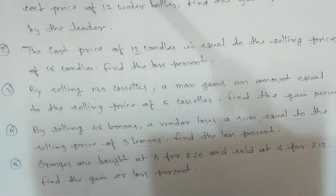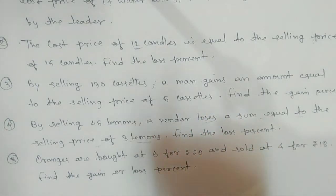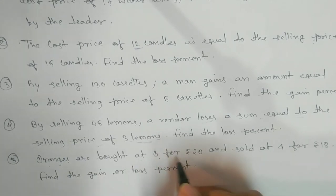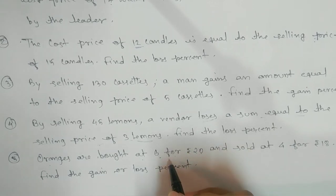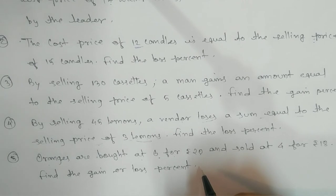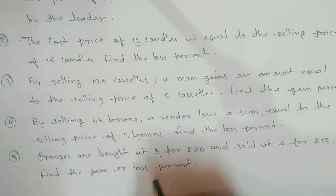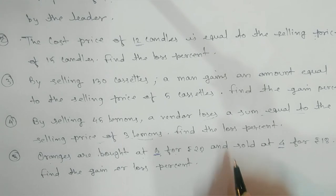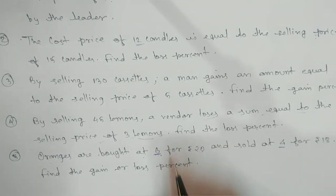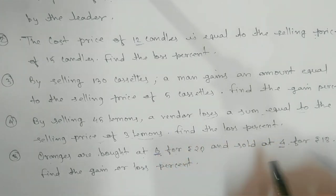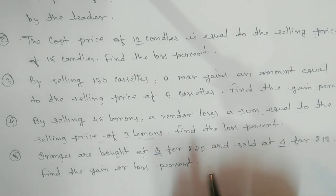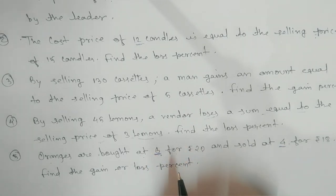The fifth question is quite different. Oranges are bought at 6 for ₹20 and sold at 4 for ₹18. To compare gain or loss, we need to find the CP and SP of 1 orange.